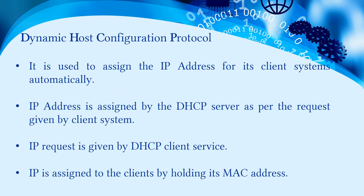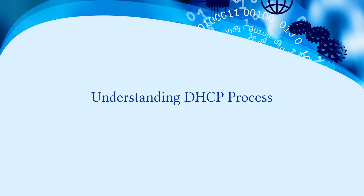DHCP is used to assign IP addresses automatically for client machines. This IP address assignment is based on a request from the client, and the DHCP server responds to that request. The DHCP server identifies a client by verifying its MAC address. We'll also understand the DHCP process — how IP assignment happens in the background.